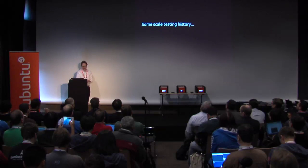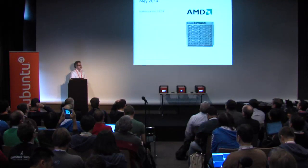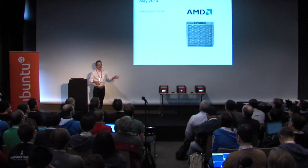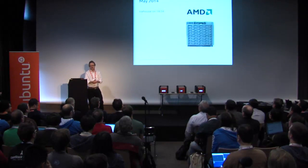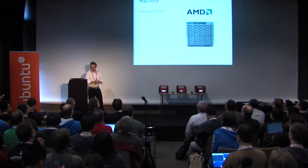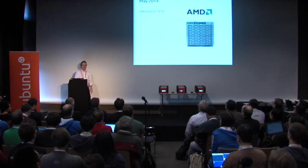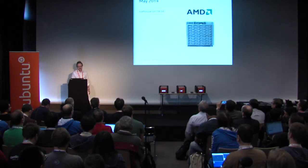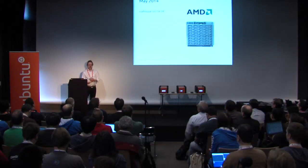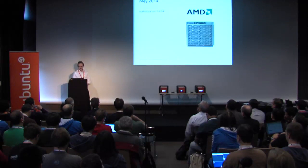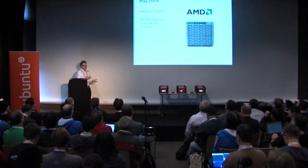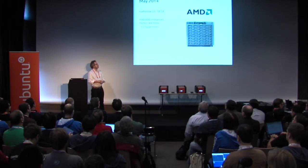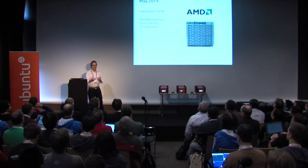Let's start with some scale testing history. Last cycle we partnered with AMD and we had a number of C micro chassis — 10 in total — each with 64 servers, all four core, eight threaded, 32 gigabytes of RAM and SATA disks. We tried to push an Icehouse cloud as far as we could and as quickly as we could. Our headline figure six months ago was that we were able to get a 370-node cloud to 100,000 instances in just under 11 hours.